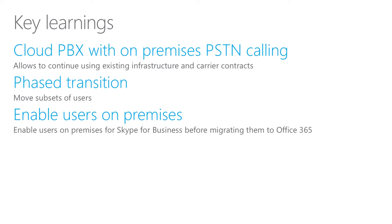In today's session, you will learn that Cloud PBX with on-premise PSTN calling will allow your Skype for Business Online users to leverage your existing PSTN infrastructure and carrier contracts. We'll also talk about how it allows a phased transition from your current infrastructure, moving subsets of users to Office 365. And we'll discuss how users need to be enabled on-premises first before you move them to Office 365.